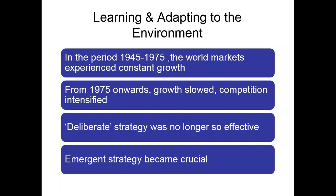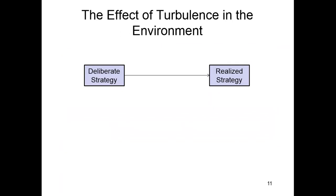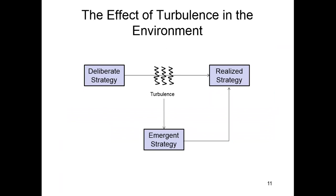What do we mean by emergent strategy? We start with a deliberate strategy — we identify objectives and choose strategies to turn them into a realized strategy. Then things happen in the market that we don't control; we call this turbulence. The turbulence disrupts our smooth transition from deliberate to realized strategy, and we use emergent strategy to work around it and still reach the original or marginally adjusted realized strategy. We're not necessarily completely changing what we're trying to achieve — we're changing how we get there to stay agile and competitive.